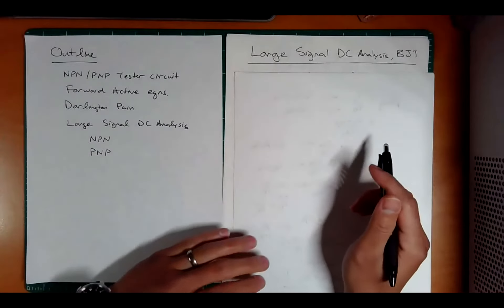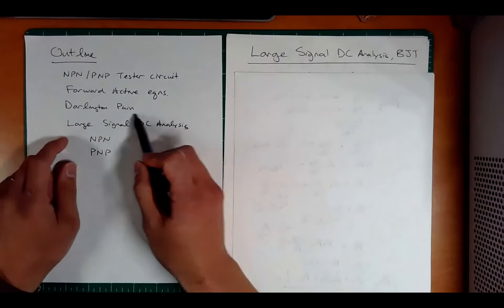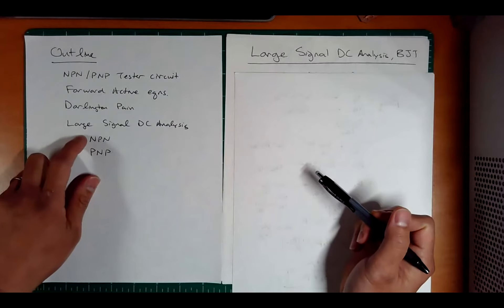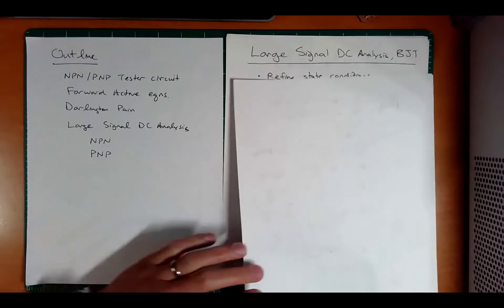Hi, this is ET370, Lecture 5, Part B. We're going to look at this new tool called Large Signal DC Analysis. Specifically, we'll look at the NPN transistor, and in the next one, we'll look at the PNP.